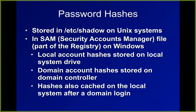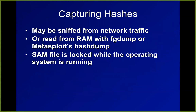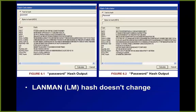Password hashes are in the /etc/shadow file on Unix systems. On Microsoft systems they're in the registry, stored in the SAM file, and there are plenty of hacking tools that can recover it from Windows systems. You can sniff passwords from network traffic, read them from RAM, or read the SAM file by booting another operating system or by getting system-level access on a Microsoft system.